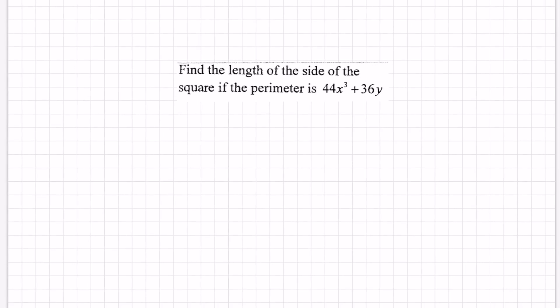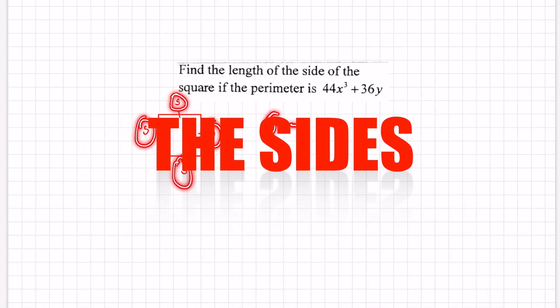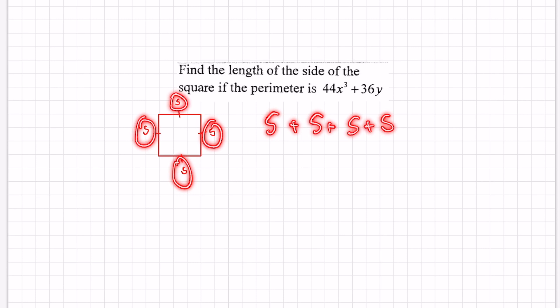First question is about a square. It says find the length of the side of the square if the perimeter is 44x³ + 36y. First we got a square and you know in a square that all the sides are congruent, so let's just label that all s to represent sides. To find the perimeter of a square we just add up all the sides, so that's just going to be s + s + s + s, or we can simplify that and say that the perimeter of a square is 4s.